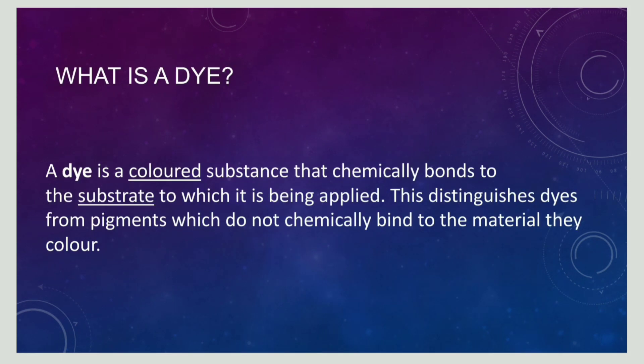A dye is a colored substance that can chemically bond to the substrate. A pigment, on the other hand, does not chemically bond to the material. So the difference between a dye and a pigment is that a dye can chemically bond to a substrate, whereas a pigment cannot chemically bond to the substrate.